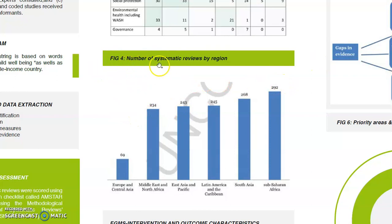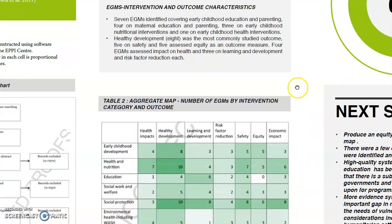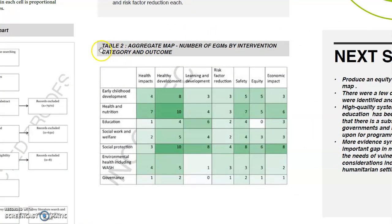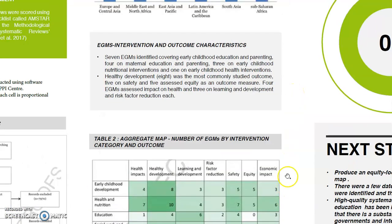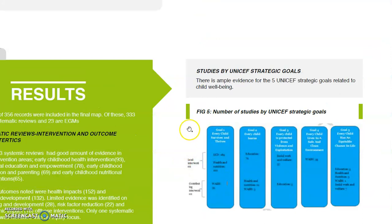Systematic reviews were found to be almost equally concentrated in all regions. Figure 4 describes the number of systematic reviews by region visually. The highest concentration of studies is in Sub-Saharan Africa, followed by South Asia. The review identified 25 evidence gap maps, with 7 covering early childhood education and parenting. The number of evidence gap maps by intervention category and outcomes is presented in Table 2. The studies have also been analyzed in line with the UNICEF strategic goals, as shown in Figure 5.